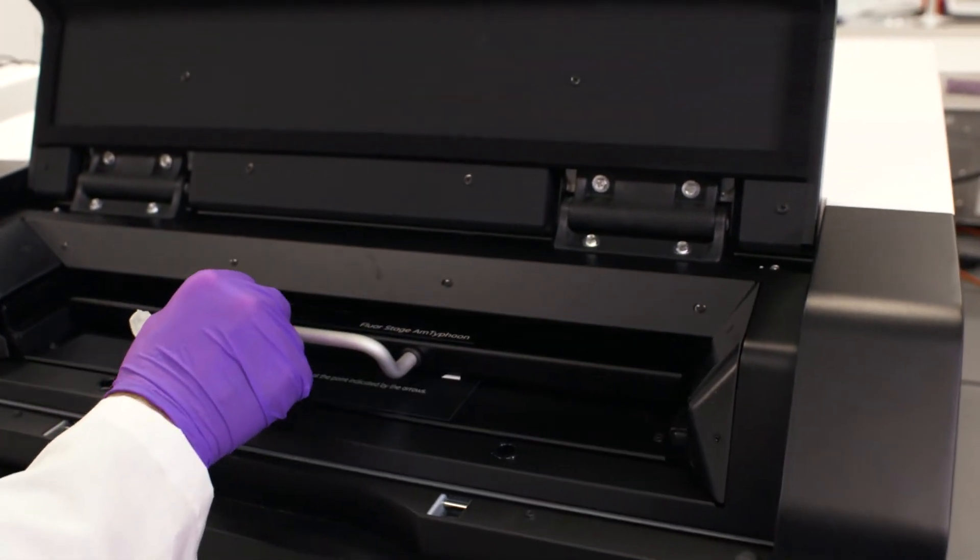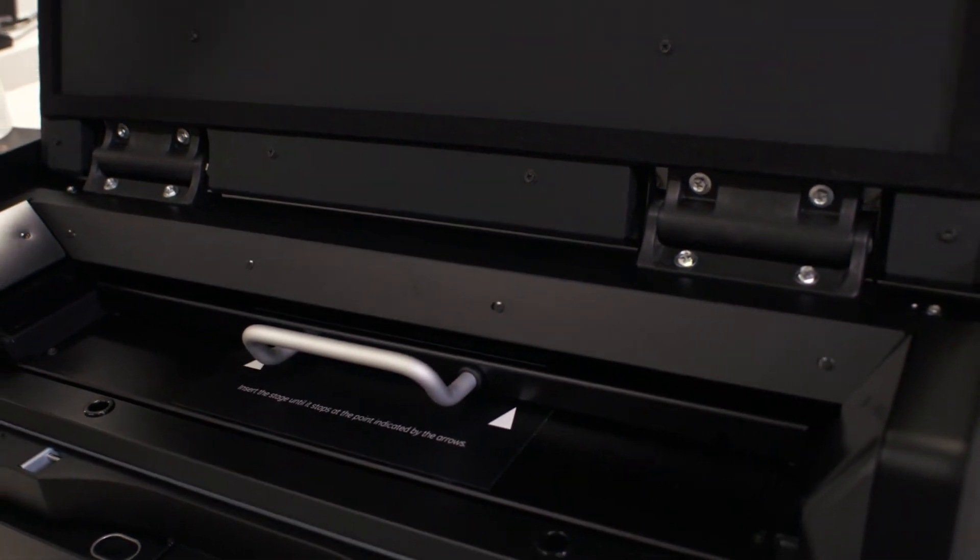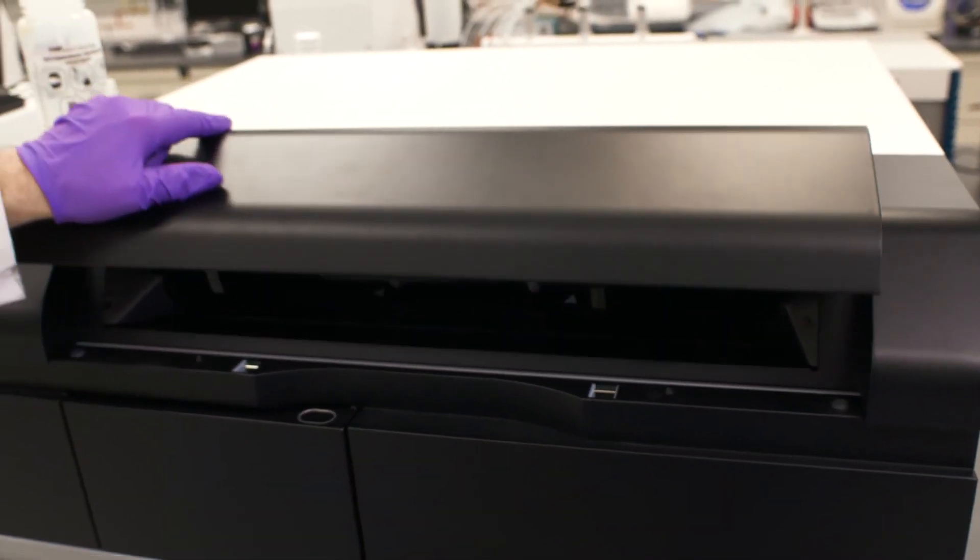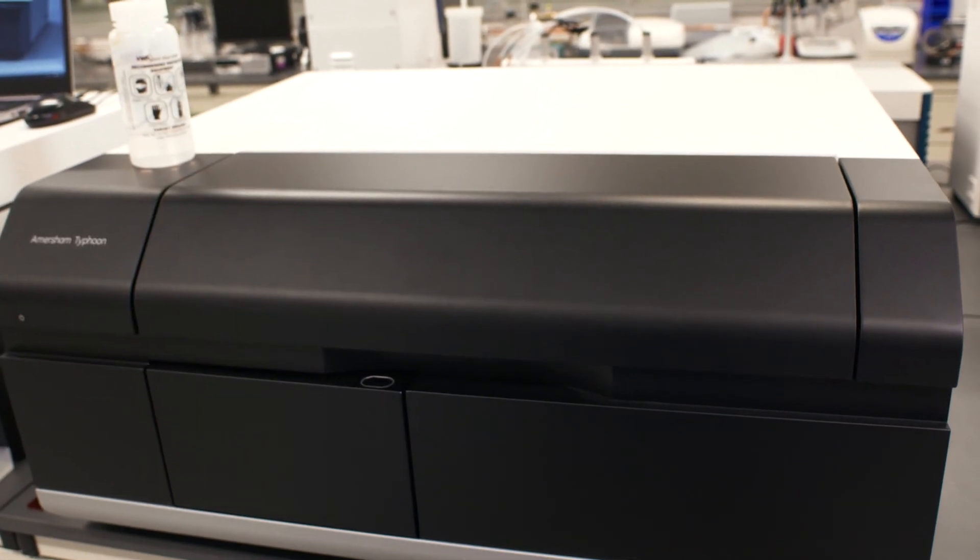We're going to close the instrument. Take note of the orientation of where we placed the gel with the letters and numbers. Then we close the lid. Now we can set up in the control software to capture our image.